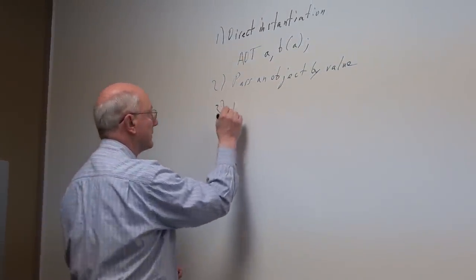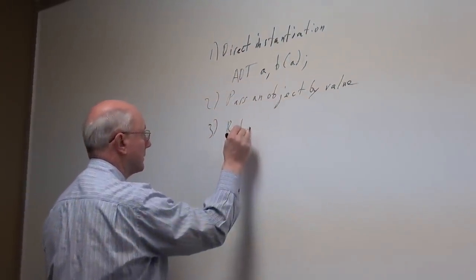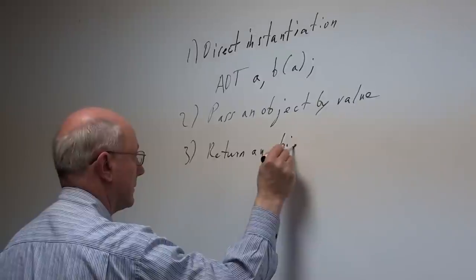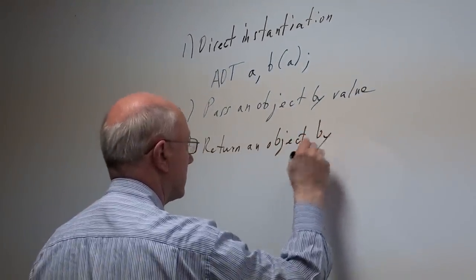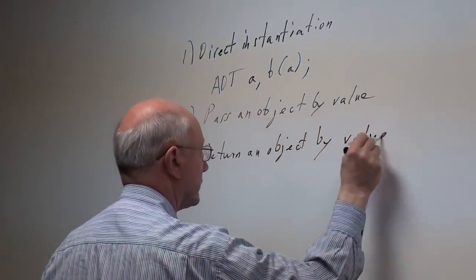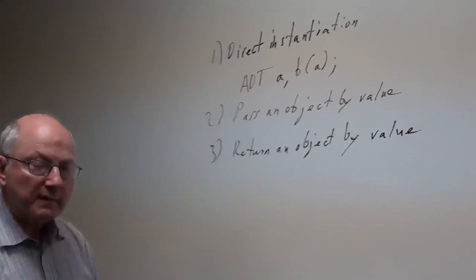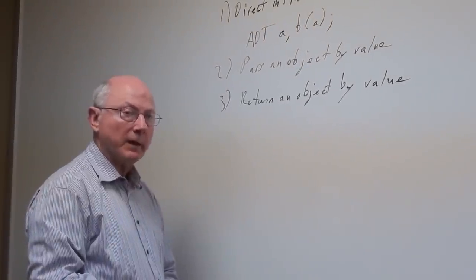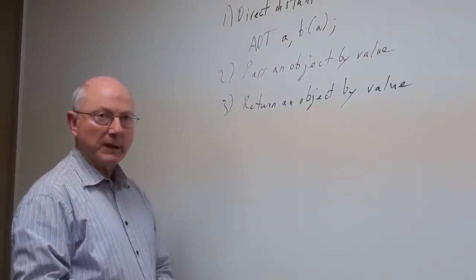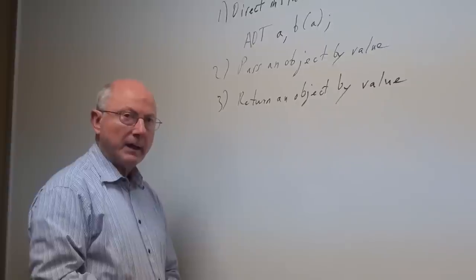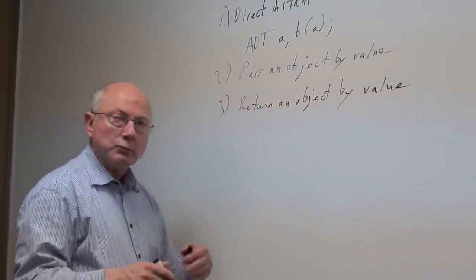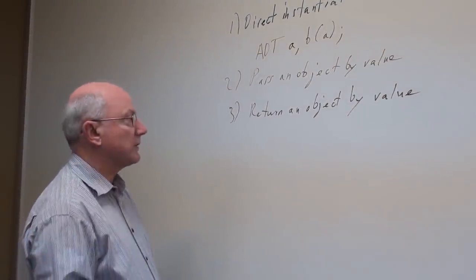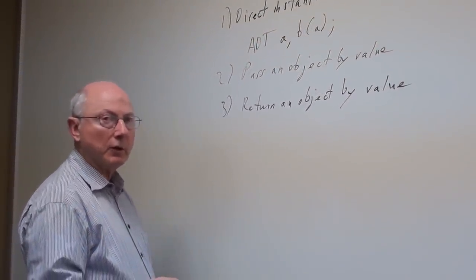Third situation is return an object by value. In other words, inside a function you have a locally declared object and you want to return it out of the function. Well, if it's auto, meaning on the stack, of course it's going to disappear. And therefore, to preserve its value, you must make a copy. So, coming out of the function, the copy constructor will get called once again.